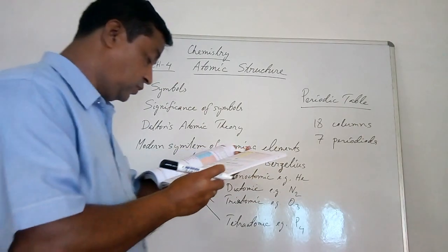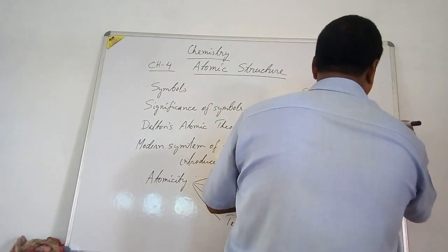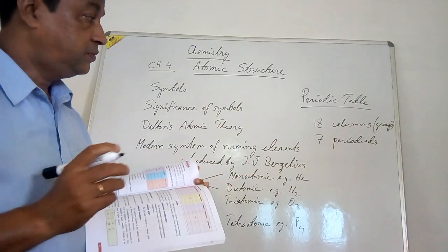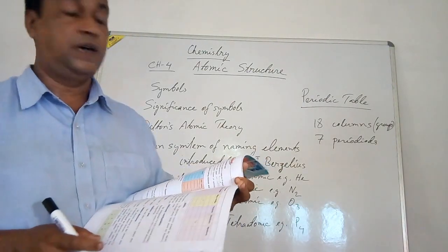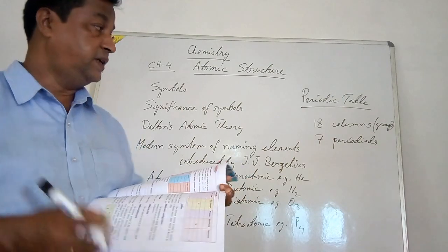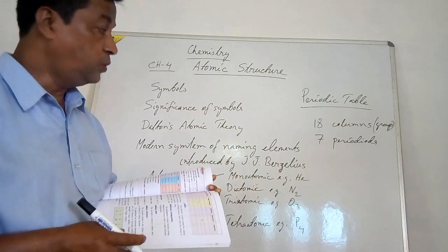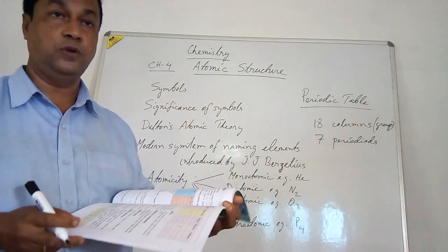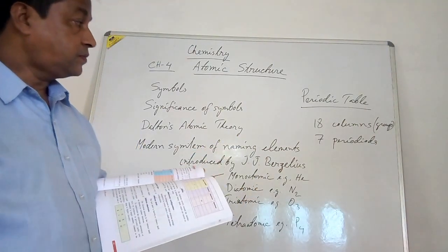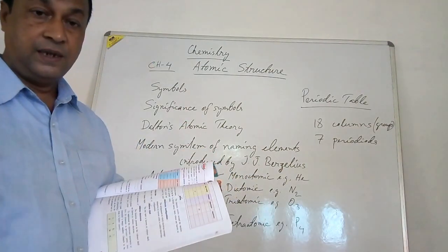The vertical columns are called groups. In one group, elements have the same number of electrons in their outer shell, so their properties are also the same. There are 18 groups in total in the periodic table.